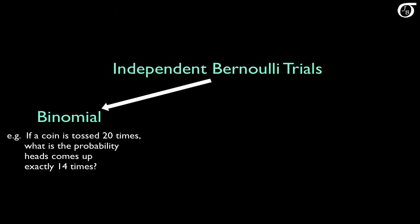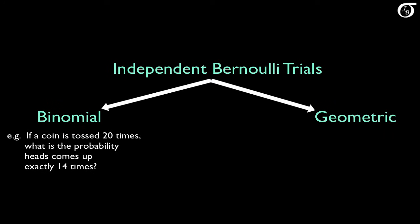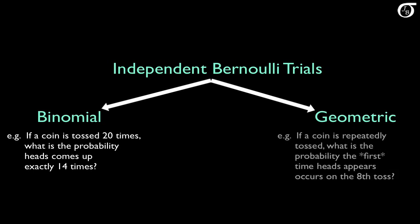Continuing on with the theme of independent Bernoulli trials, the geometric distribution is the distribution of the number of trials needed to get the first success. For example, with the geometric distribution we can answer a question like: if a coin is repeatedly tossed, what is the probability the first time heads appears occurs on the eighth toss?